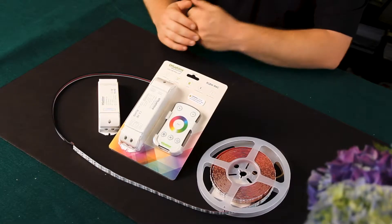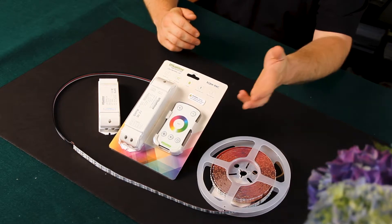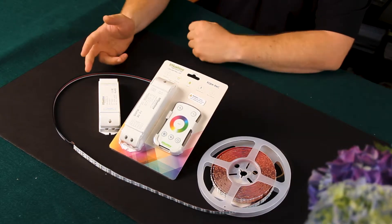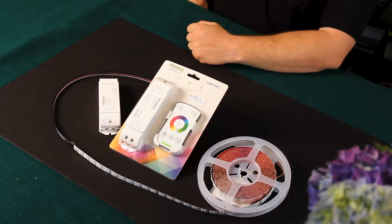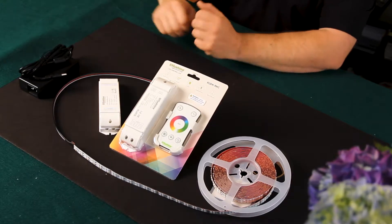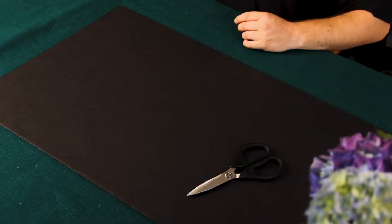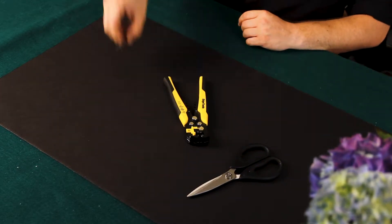All you need is your RGBW field cuttable tape, a controller and handheld remote, and a repeater. You'll also need a 24 volt power supply for the LED controller and for the repeater. All the tools you'll need are a pair of scissors, wire stripper, and a screwdriver.